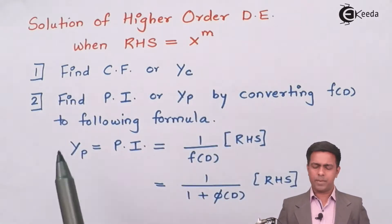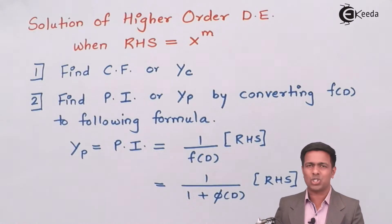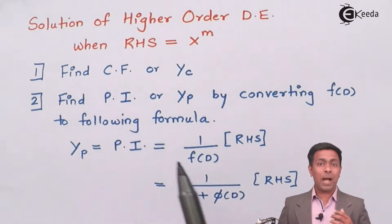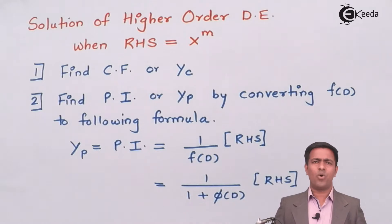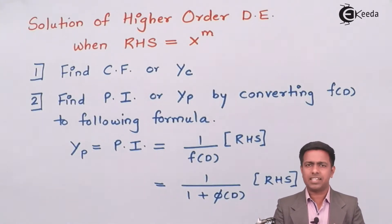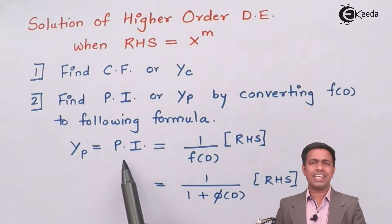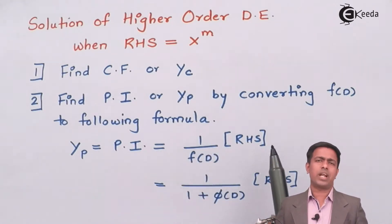Step number two is to find the particular integral, also called yp. We find it by converting the given f(D) using one of the following formulas. The particular integral yp is given by 1 over f(D) multiplied by the right hand side.